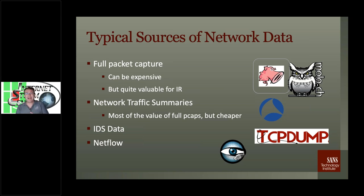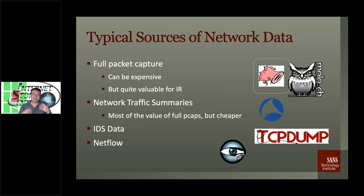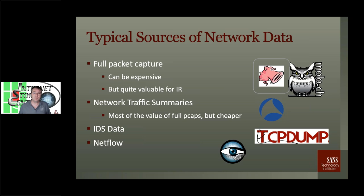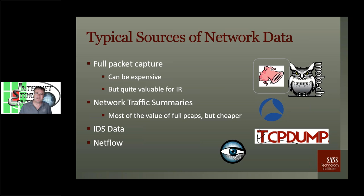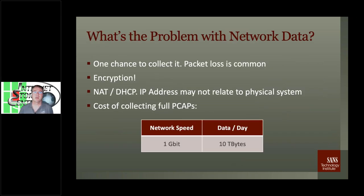IDS data is great to show you that something is going on, but it typically doesn't tell you what happened before and after — that's why we need more verbose sensors like Zeek or full packet captures to fill in the gaps. If you have a lot of traffic, the only thing you may have available is NetFlow, which essentially tells you who talked to whom and how much. It may still be useful: how much data went to an external IP address? Maybe we can decide that probably none of our sensitive data was lost, so we don't have to notify any users.